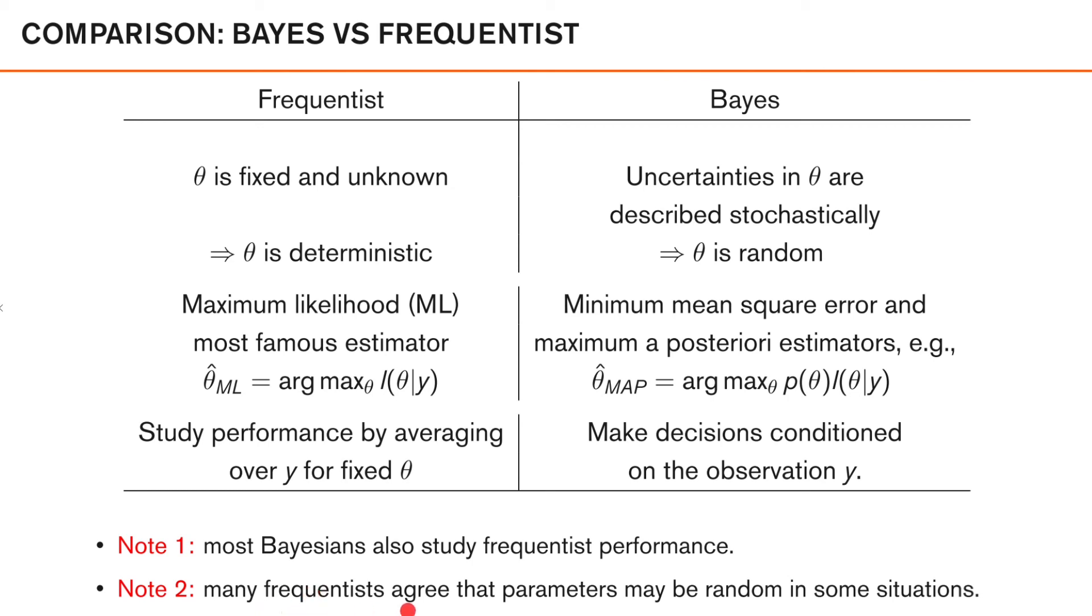Also, there are many problems where frequentists agree that the parameters may be random in some situations. For example, in optimal filtering, which we will look at in this course, most people agree that the parameters are actually random and not deterministic. So this could be, for example, the motion of vehicles that we discussed earlier.